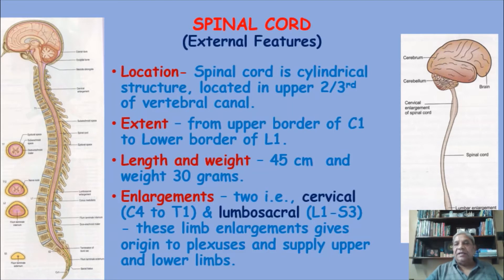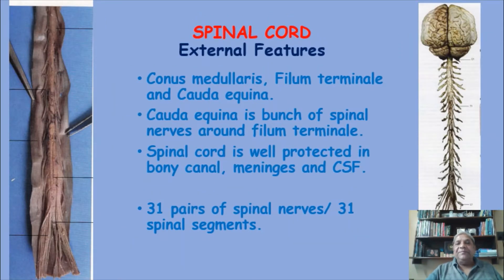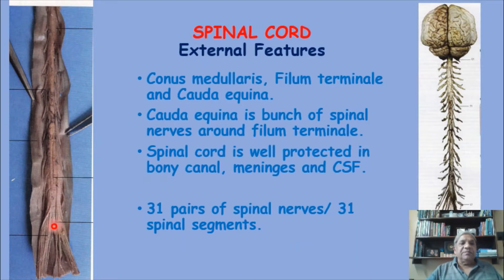Moving to the next slide, we will see some external features of the spinal cord - the conus medullaris, filum terminale, and cauda equina. The conus medullaris is the lowermost part of the spinal cord which becomes a cone-like structure, present just below the lumbosacral enlargement. It lies at the level of the lower border of the L1 vertebra, which is why it is called conus.